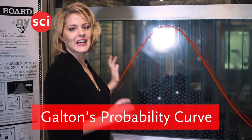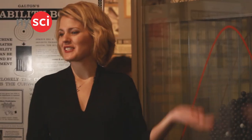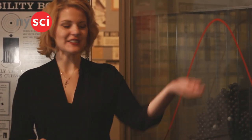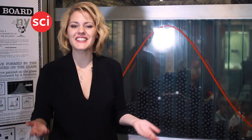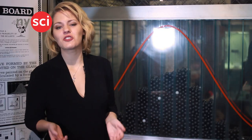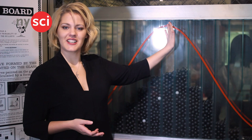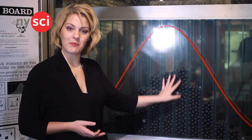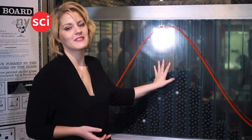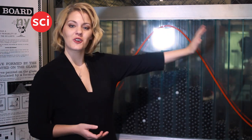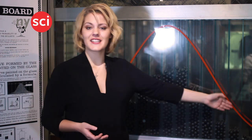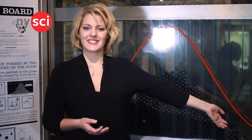This is called Galton's probability curve. The shape of this curve is often called a bell curve because it looks kind of like a bell. Using the example of height, the chances that you'll be 5'7 is right here, and lots of people fall pretty close to 5'7. But as you get taller or shorter than the average, the chances that you'll be that height become less.